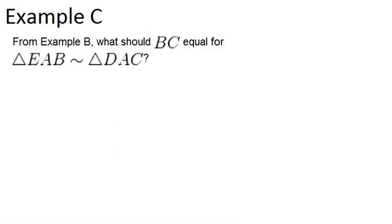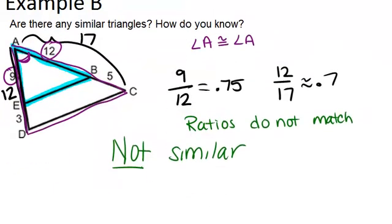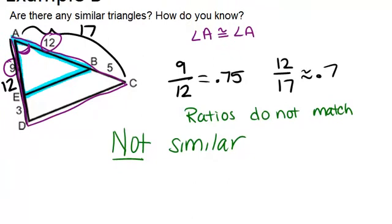And let's go to example C. From example B, what should BC equal for the two triangles to be similar? Alright, so let's go back to example B and figure out if we can change side BC. So side BC is right here, and it was 5. So what we want to figure out now is what should that be in order to make it work. So we're going to make that be x, which means that the full side length wouldn't be 17, it would be 12 plus x.